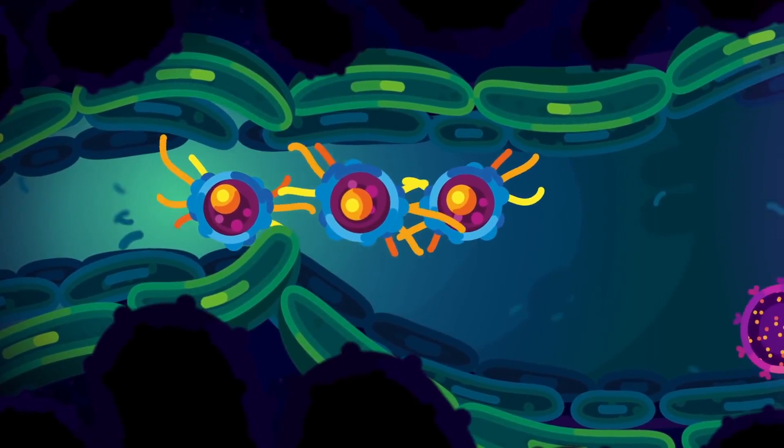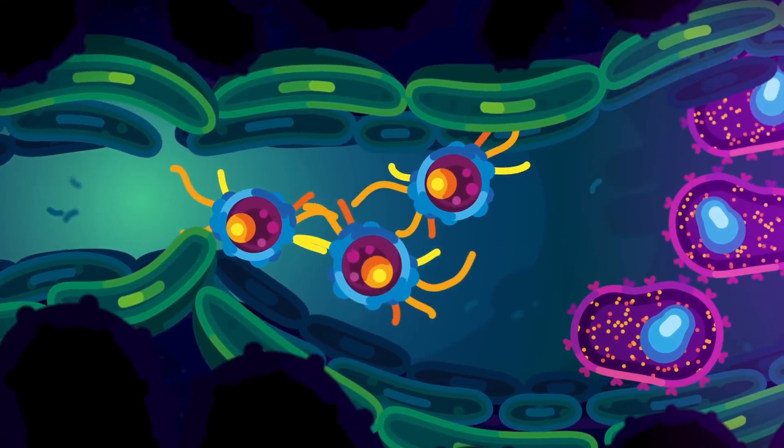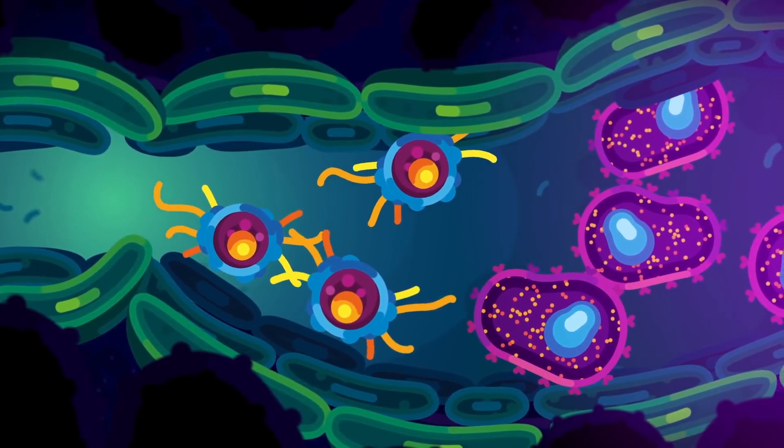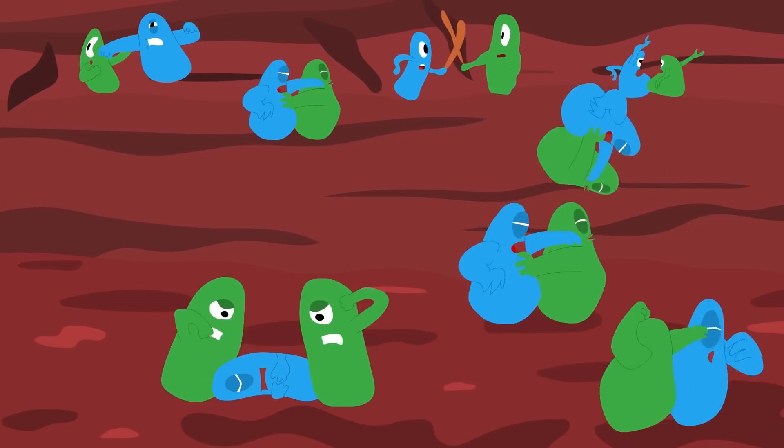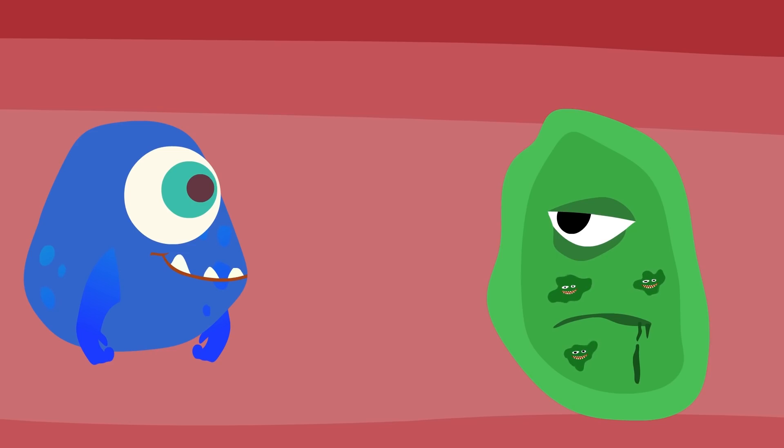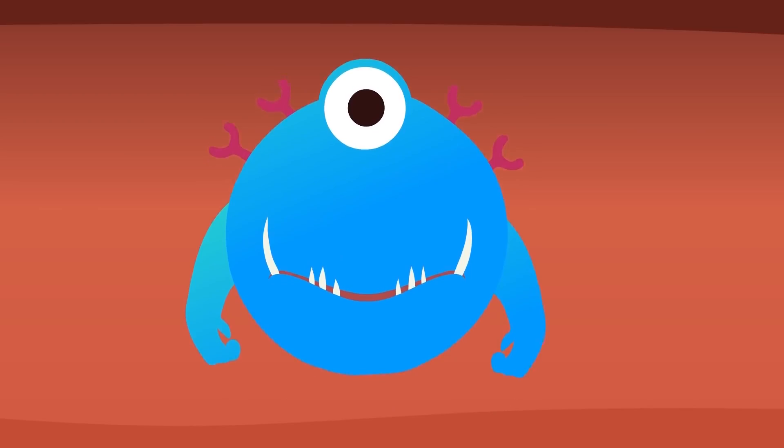When the body encounters a new pathogen, specialized cells called B cells and T cells work together to identify and neutralize it. B cells produce antibodies, which are proteins that bind to specific pathogens and mark them for destruction by other immune cells, while T cells can directly attack infected cells. Together, the innate and adaptive immune responses work to identify and eliminate invading pathogens before they can cause harm.